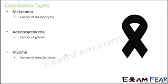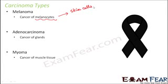Under carcinoma, different names are given for cancer of different parts. For example, melanoma is cancer of melanocytes, which are a type of skin cell. Since skin cells are part of the epithelium, melanoma falls under carcinoma. Adenocarcinoma is cancer of glands — the word 'adeno' is derived from glands, and since glands are part of the epithelium, this is also part of carcinoma.